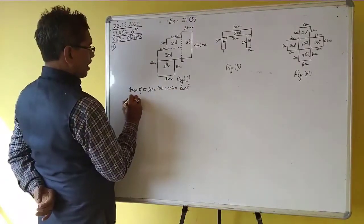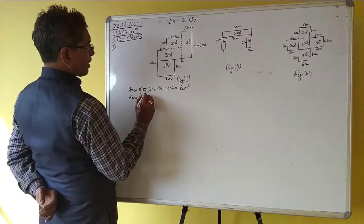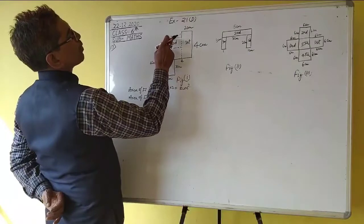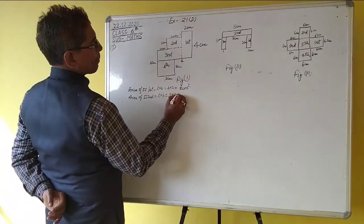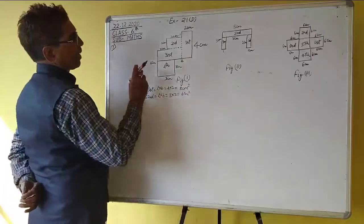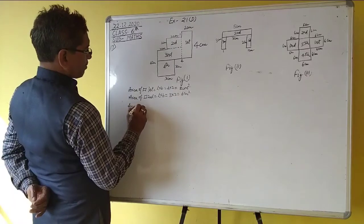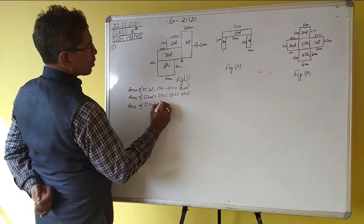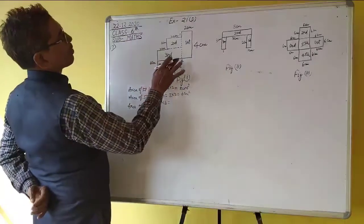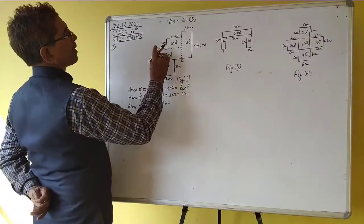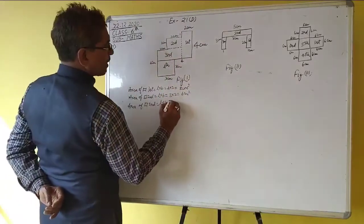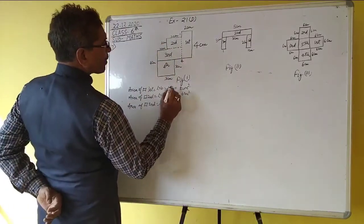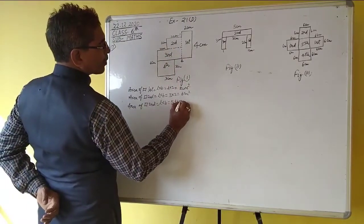Now, area of rectangle second is equal to l into b, equal to 3 into 2, equal to 6 cm square. Now, area of rectangle third is equal to l into b equal to 5 into 1, where 3 plus 2 equals 5, so 5 into 1 is equal to 5 cm square.